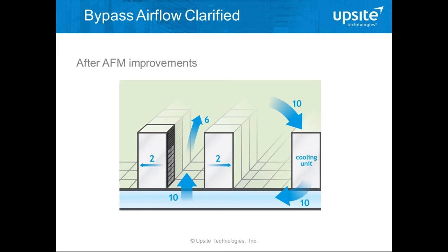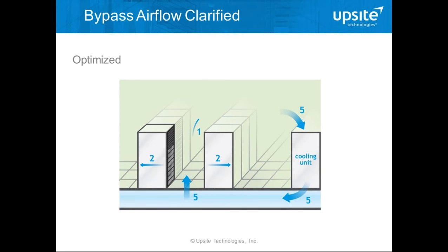Sealing the cable openings is the right thing to do, but it doesn't change the amount of bypass airflow in the room. It directs all the air to the supply tiles — now 10 units comes out of the cold aisle tiles — but the IT equipment still only needs four units total. Six units of air remain unneeded in the aisle and return to the cooling units as bypass airflow. The opportunity is to reduce the amount of air moving through the cooling units and better match supply to demand.